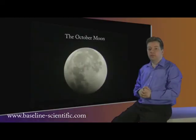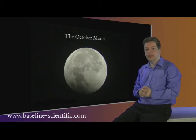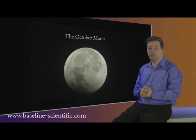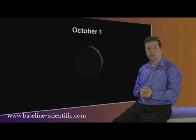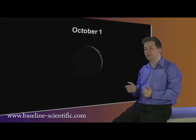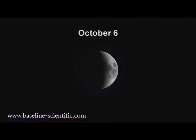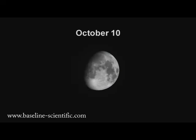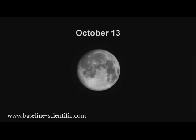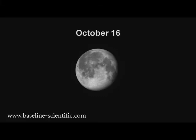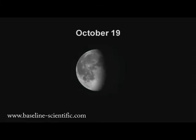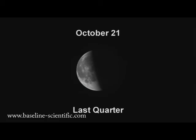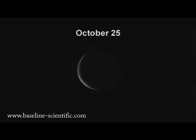Hello and welcome to the October Moon. We'll start with the phases and then have a look at the lunar occultations that can be observed during this month. The month starts with a waxing crescent, first quarter on the 7th, full Moon on the 14th, last quarter on the 21st, and we'll finish the month with a new Moon on the 28th of October.